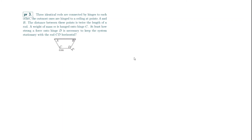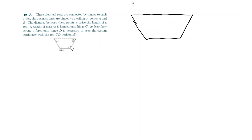Originally I assumed the rods were massless, which made the problem simple, but they're probably not meant to be massless — and there's a nice solution that doesn't really involve the rod masses. With the distance AB = 2l and each rod of length l, a bit of geometry shows these form 30-60-90 triangles.